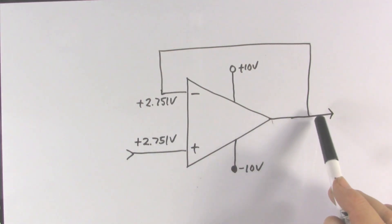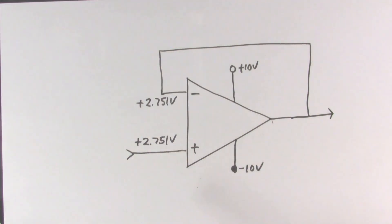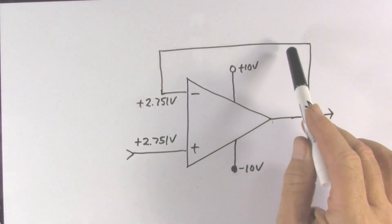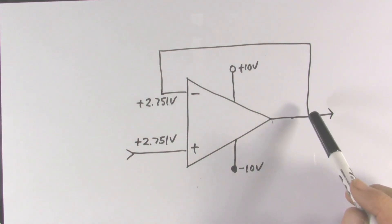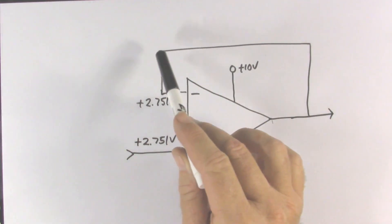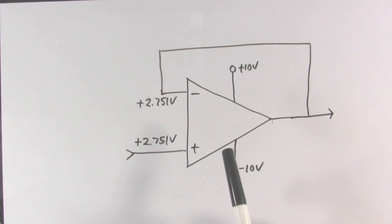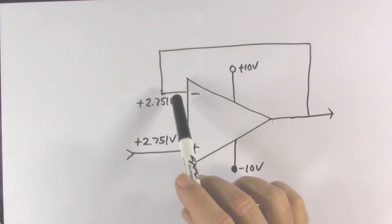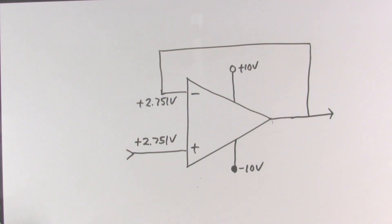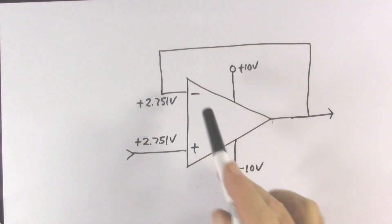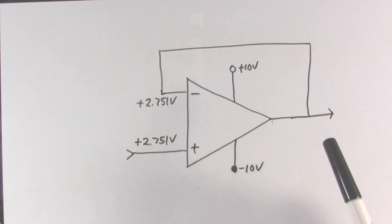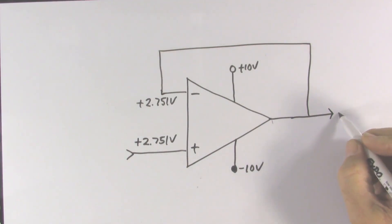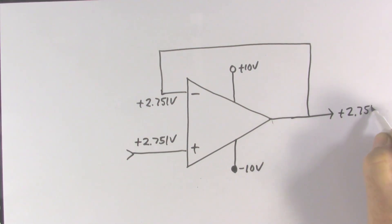The question is, what voltage did the op-amp have to put here to make those two voltages equal? Well, there's nothing between this input and the output to make any change in the voltage. There's almost no current flowing into the op-amp, so nearest makes no difference — there is no current flowing in this loop. With no current flowing through it, we can't have a voltage drop. Therefore, the output voltage must be equal to the voltage at the inverting input, so the output voltage is going to be plus 2.751 volts.